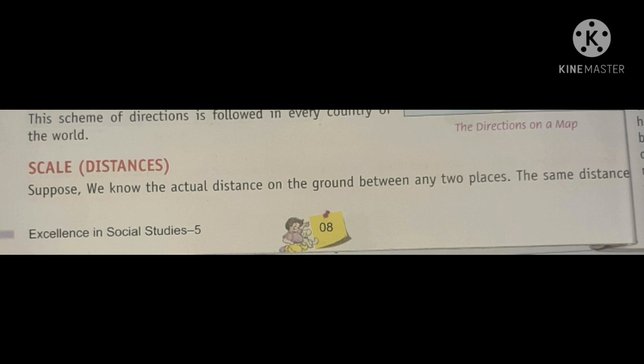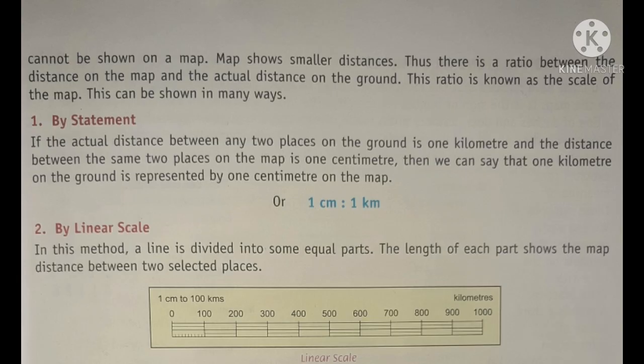Scale Distances. Suppose we know the actual distance on the ground between any two places. The same distance cannot be shown on a map — maps show smaller distances. Thus, there is a ratio between the distance on the map and the actual distance on the ground. This ratio is known as the scale of the map.